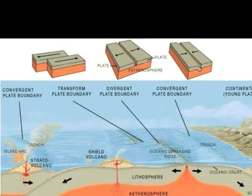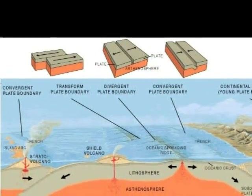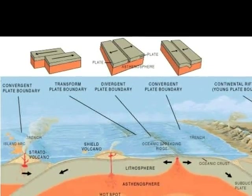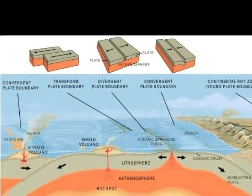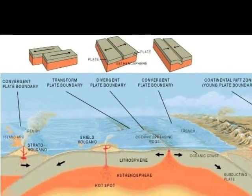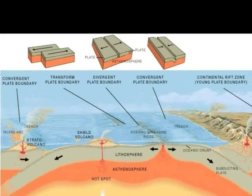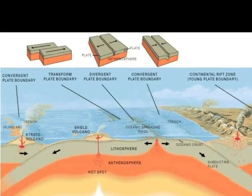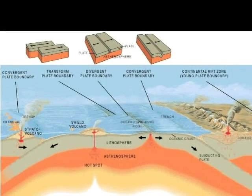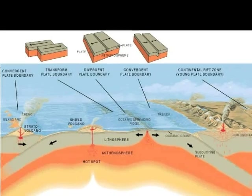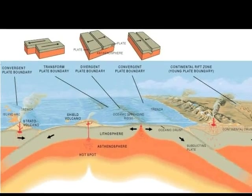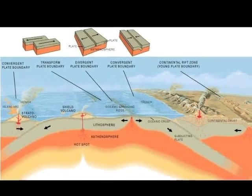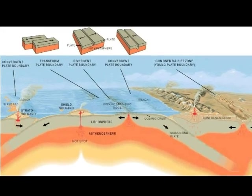There are three types of boundaries: convergent, divergent, and transform boundaries. Convergent boundary is where two plates collide. Divergent boundary is where two plates move apart from each other. Transform boundary is where two plates slide past each other. The mantle and plates move because convection currents happen in the mantle.